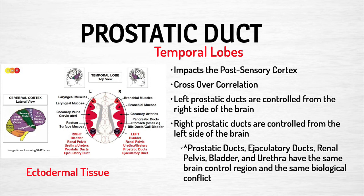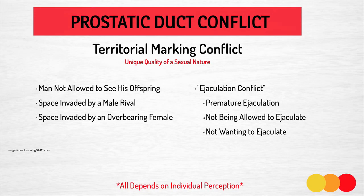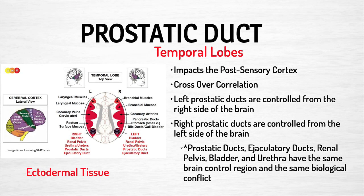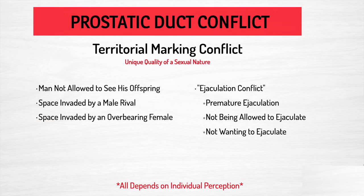The conflict for the prostatic duct is a territorial marking conflict, with a unique quality of a sexual nature. This specifically has to do with a man not being allowed to see his offspring, his space being invaded by a male rival or an overbearing female, or it could be an ejaculation conflict — premature ejaculation, not being allowed to ejaculate, or not wanting to. As always, this all depends on the individual and their unique perception.